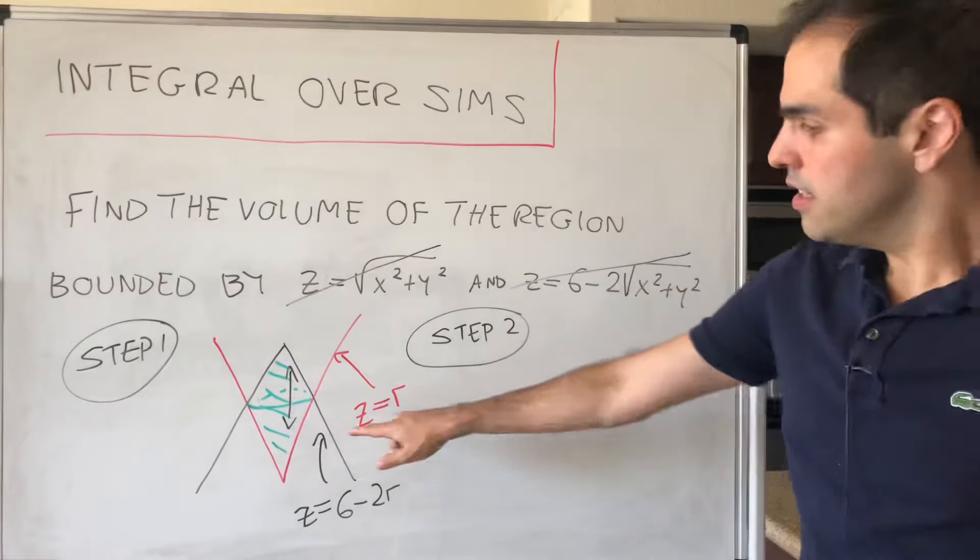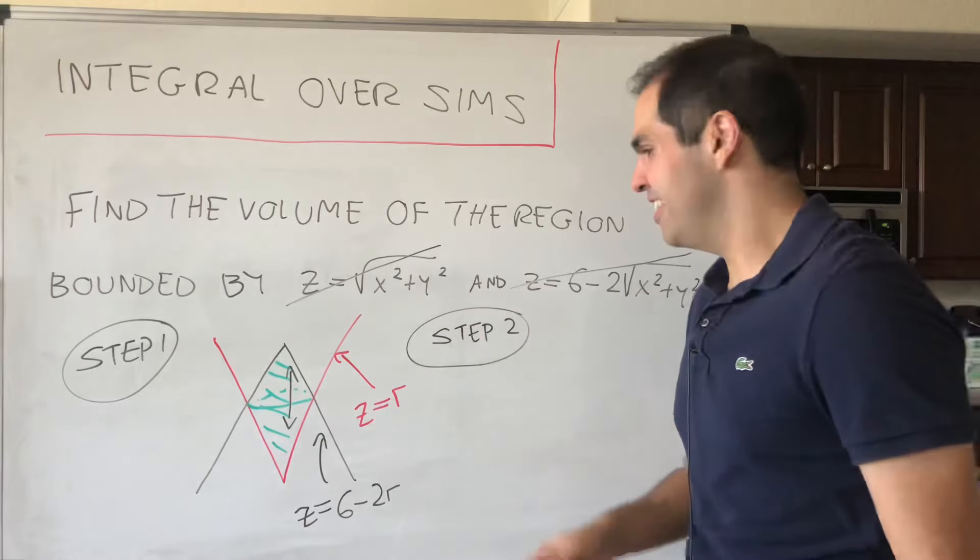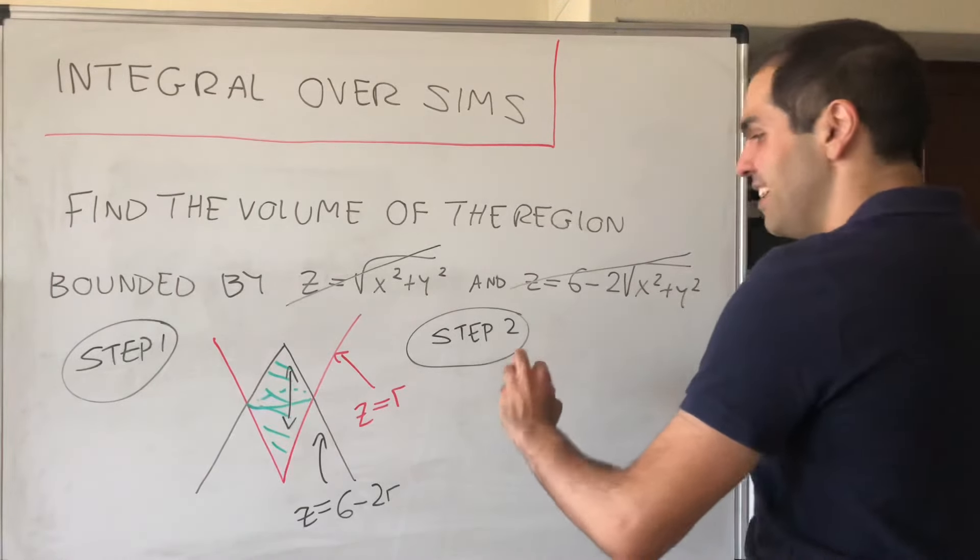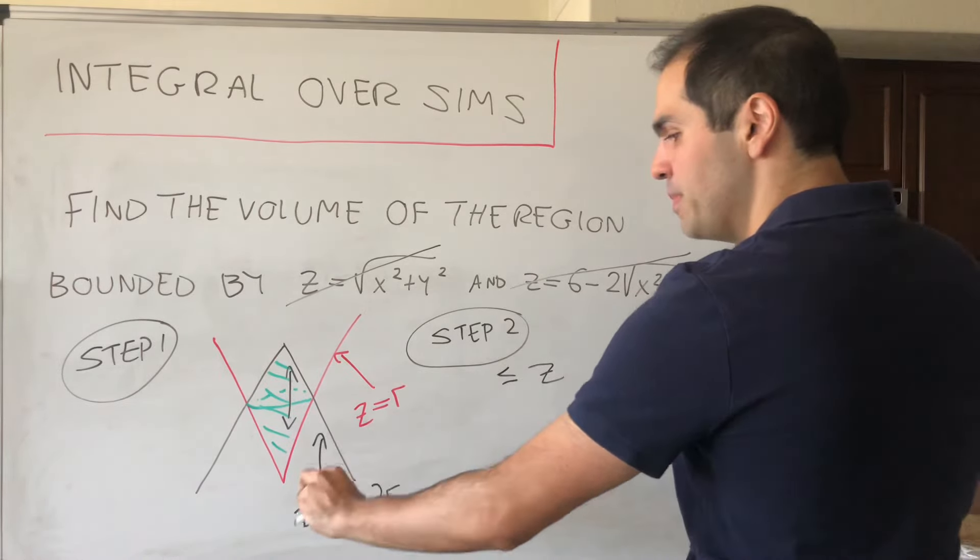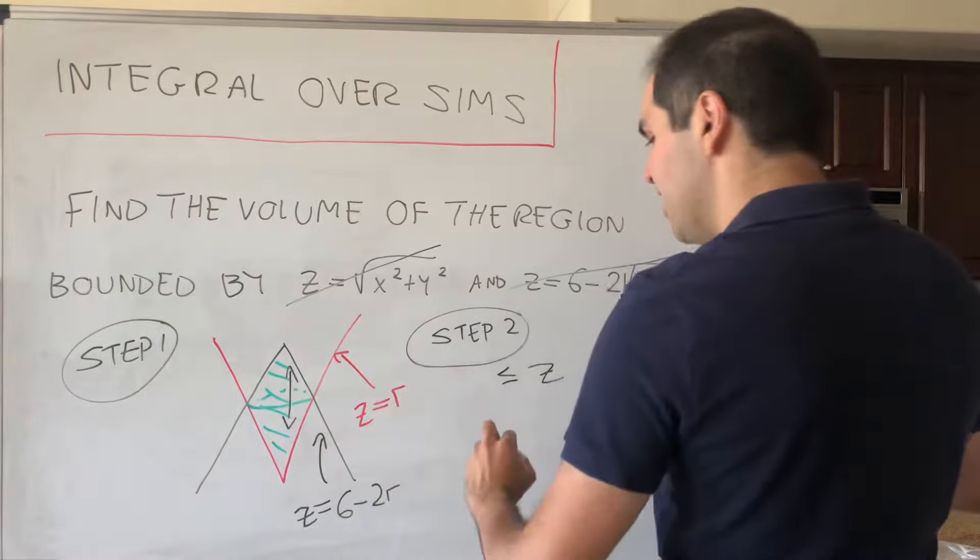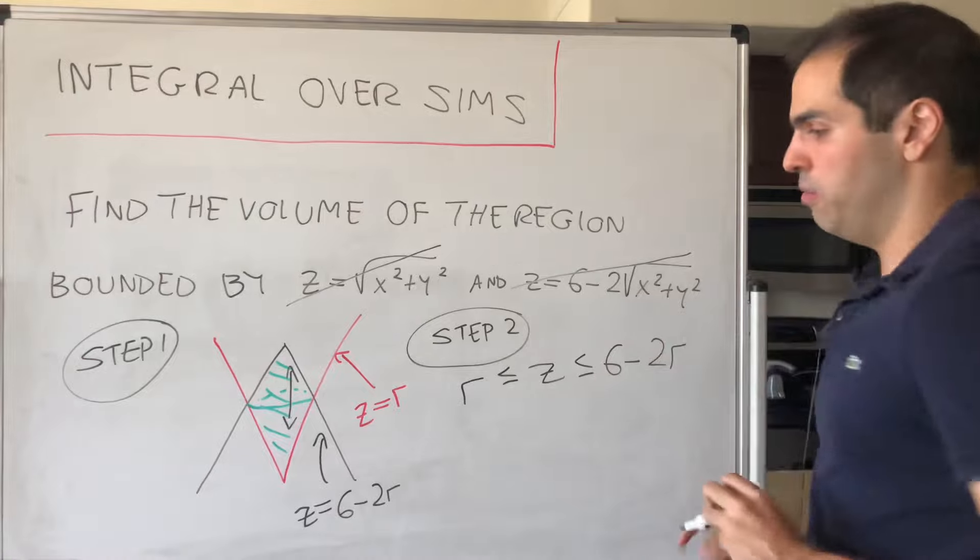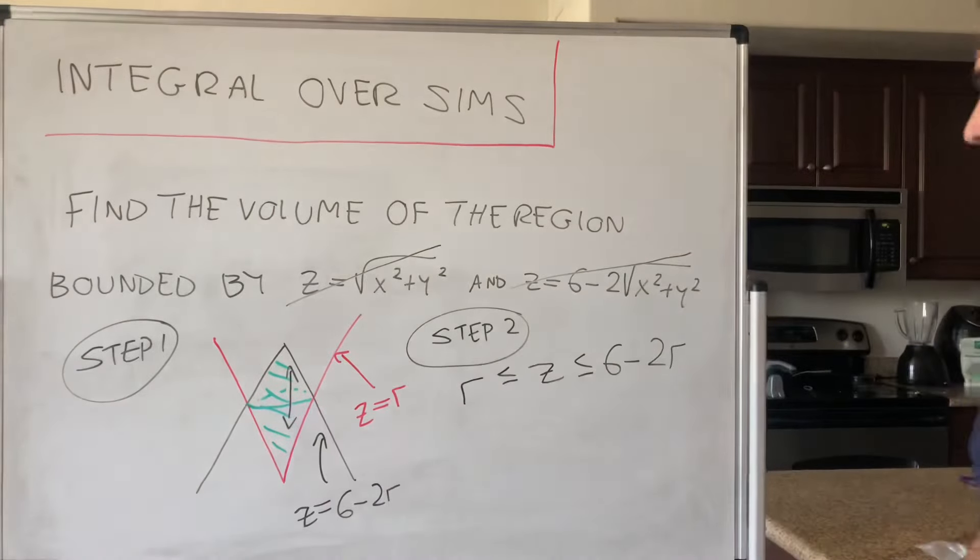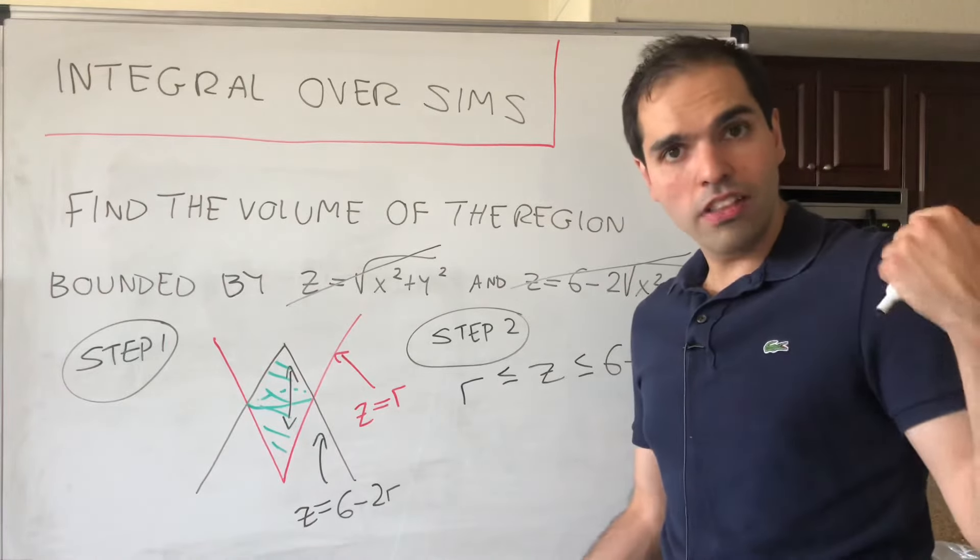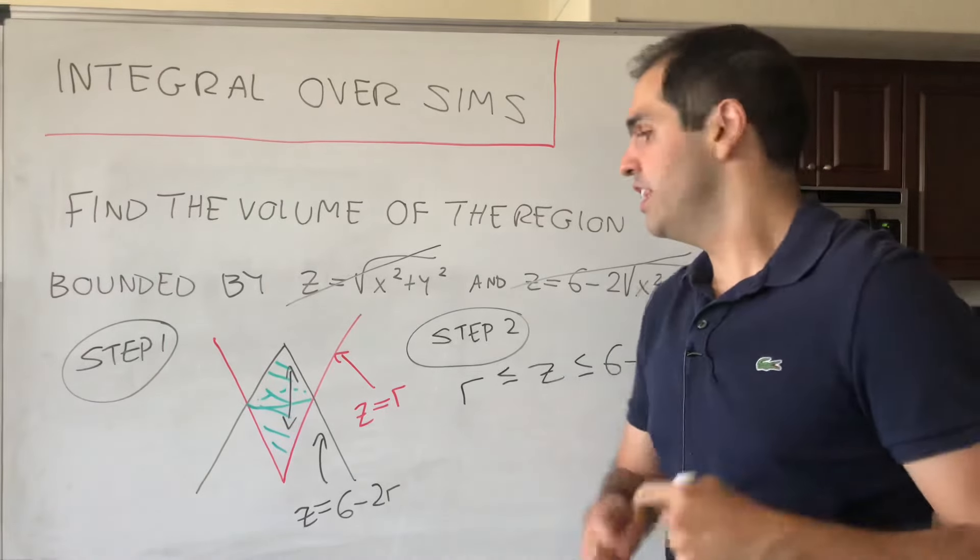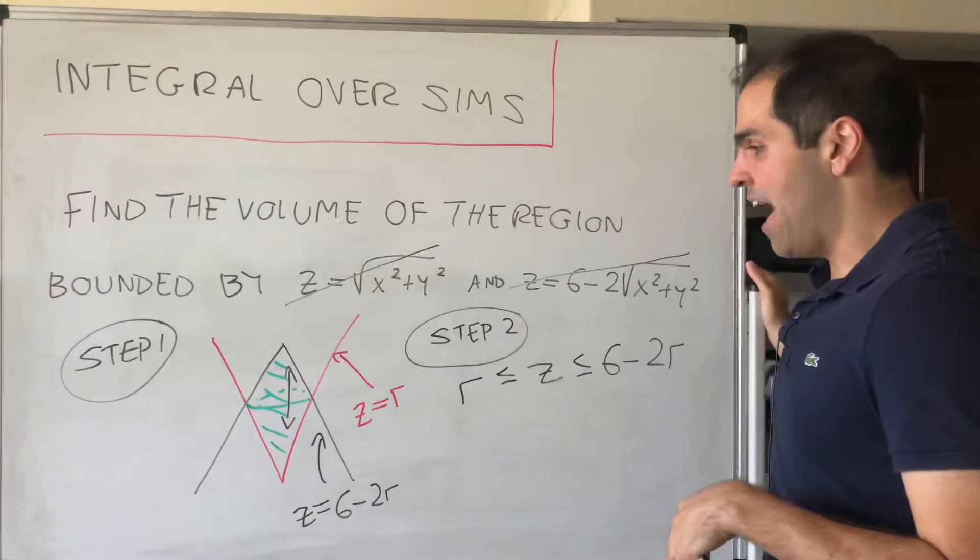Well, notice, z goes from the red figure to the black figure. So, red pen, black pen, almost. But in cylindrical coordinates, what this becomes, it is z is between r and 6 minus 2r. And by the way, notice how the colors help. You know, it's really from red to black. And then, the other thing we need to figure out, the radius is from what to what, and the angle is from what to what, because cylindrical coordinates have angles as well.